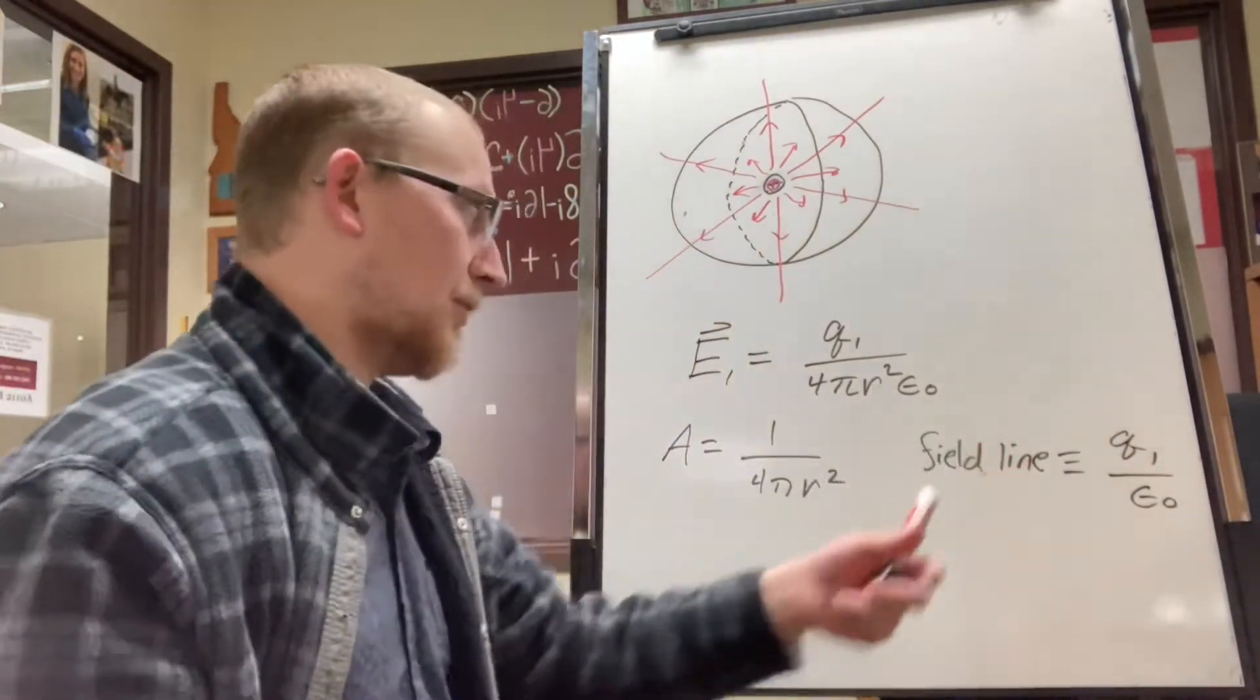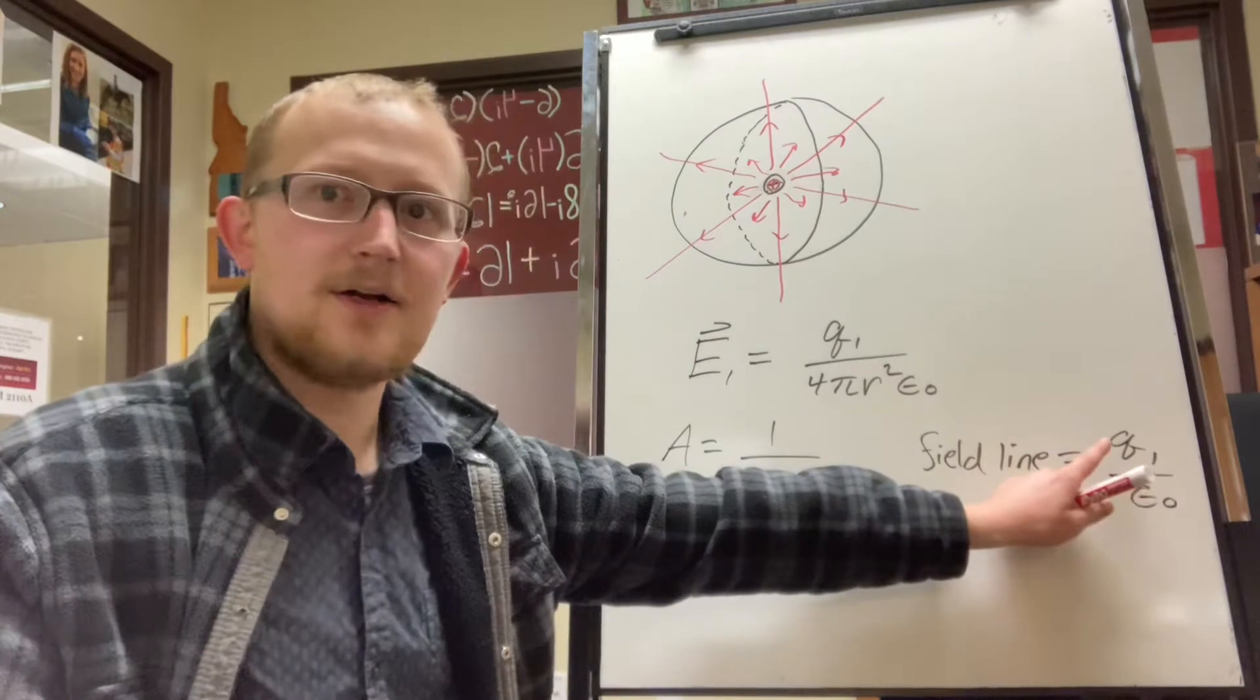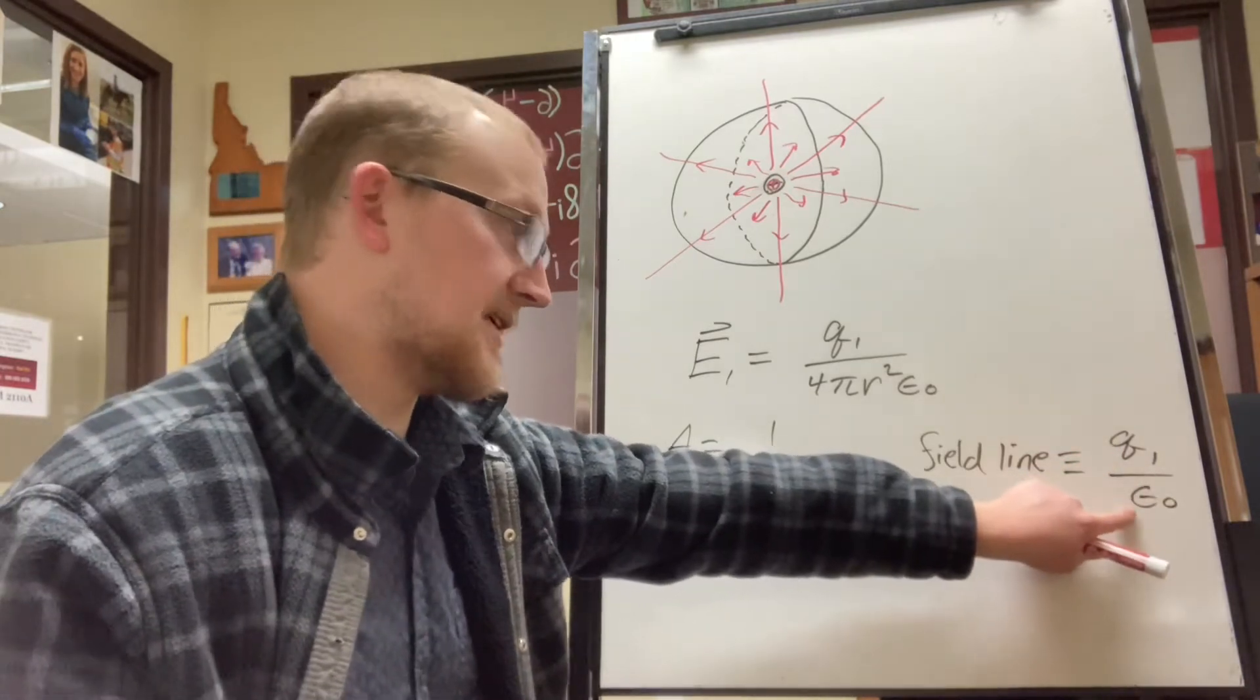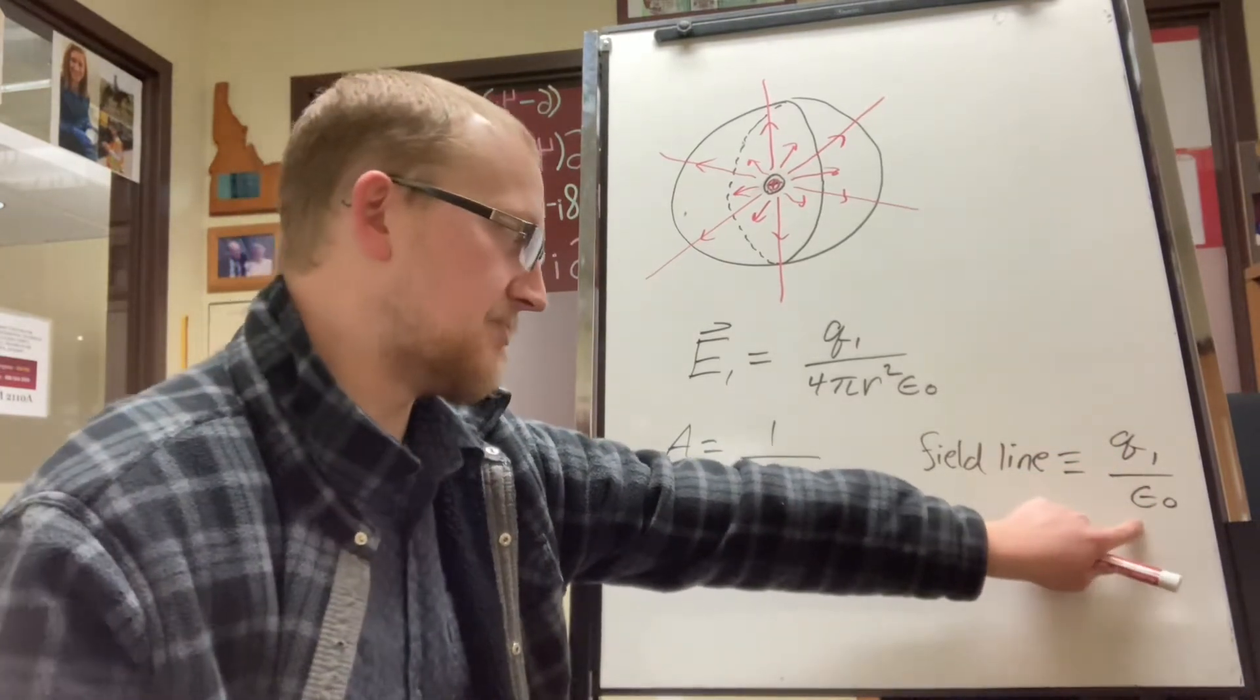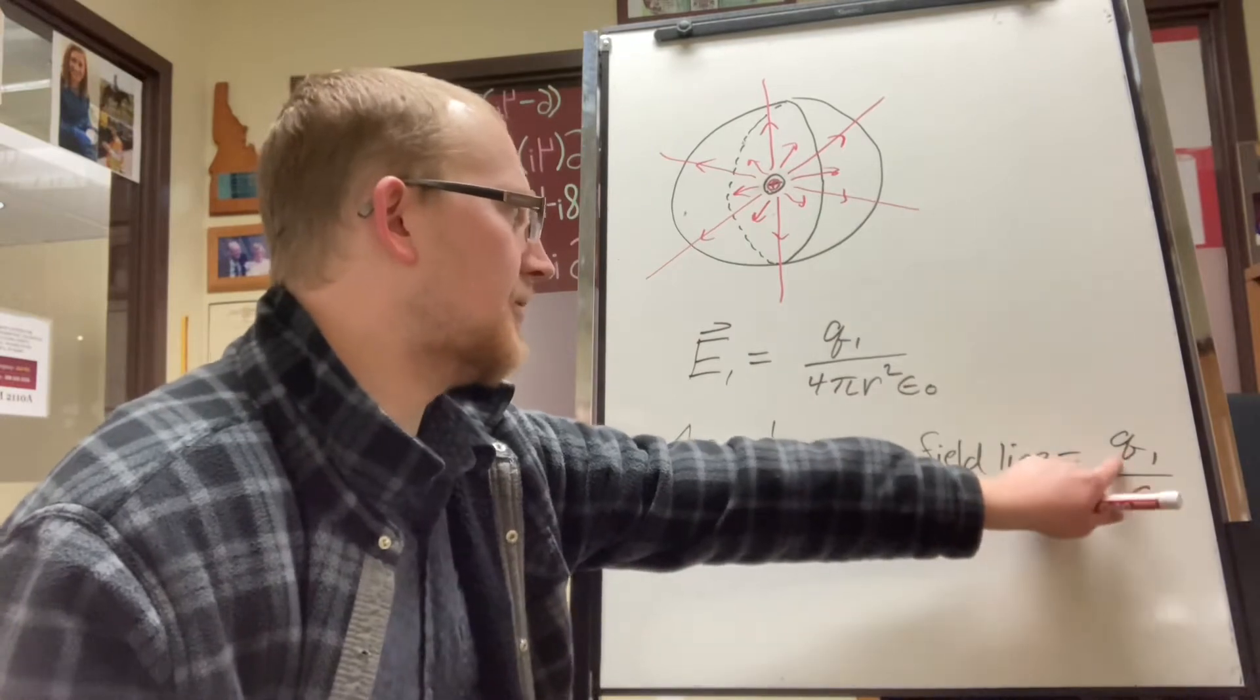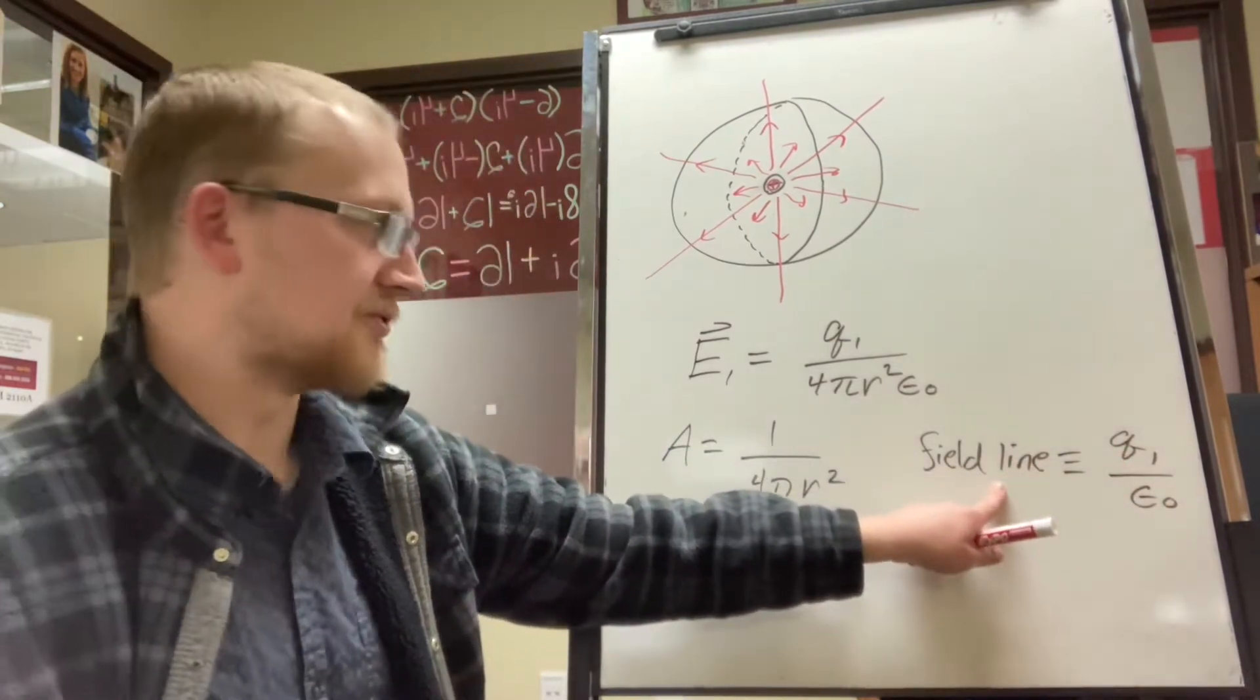So for example, a charge that's larger, and because this is constant in free space in a vacuum, so if we increase the charge, we're going to increase the number of field lines.